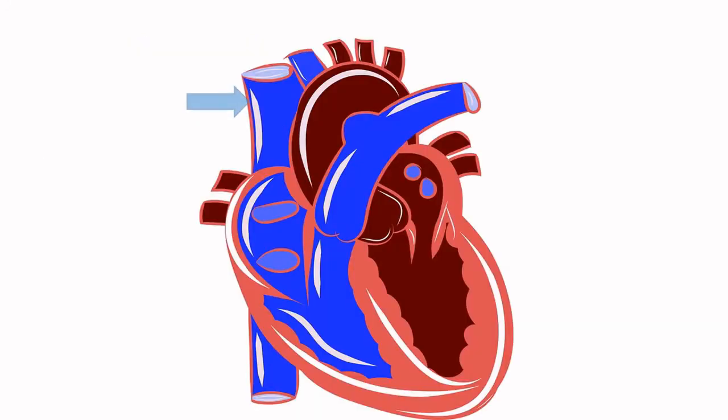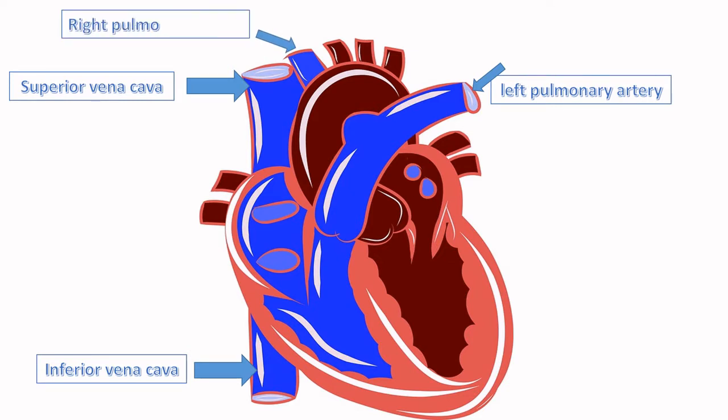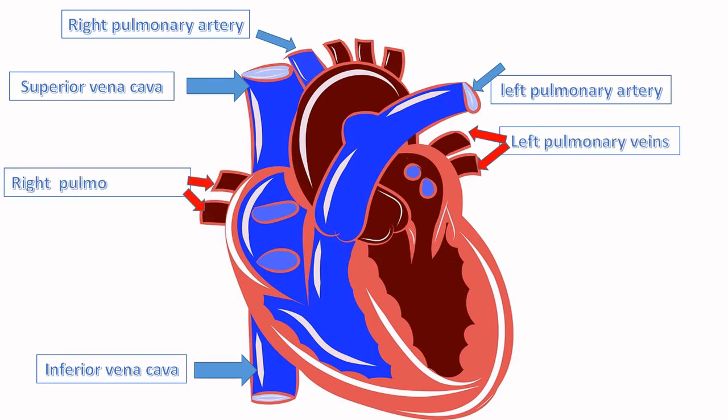Let's see this external part of the heart. Here is superior vena cava. There is inferior vena cava. Then there is the left pulmonary artery and the right pulmonary artery. Here we see the right pulmonary veins and left pulmonary veins and then finally we see the aorta that takes blood into other part of the body, taking it from the heart.